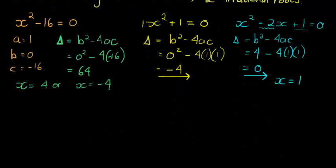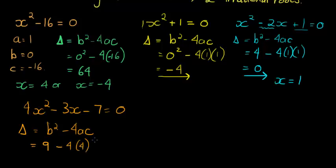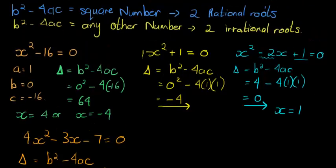Let's do one more. Our last example: 4x squared minus 3x minus 7 equals 0. The discriminant equals b squared minus 4ac. b is negative 3, so negative 3 squared is 9, minus 4 times 4 times negative 7. If we calculate this, we get 121. We can take the square root of 121, and therefore it will have two rational roots.